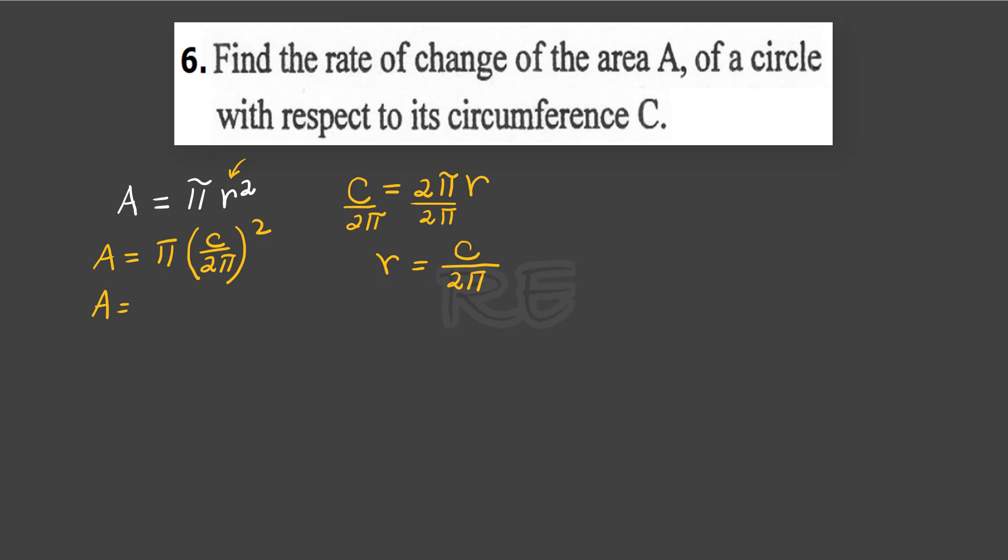The area is pi times, distribute the exponents, C squared over 2 pi squared, which is 4 pi squared.